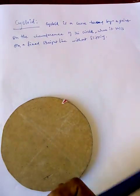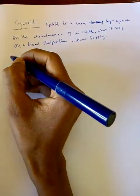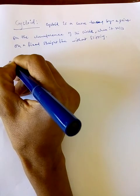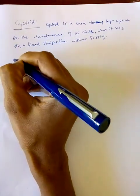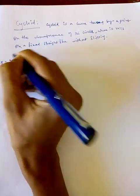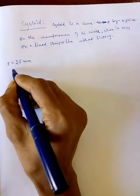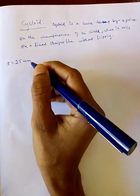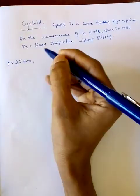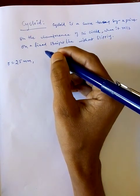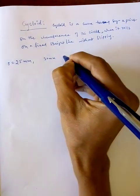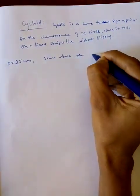From an exam point of view, you will be given only the radius or diameter of the circle — for example, 25 mm radius. That radius is enough to construct the cycloid. He may also ask you to draw the tangent at a point, for example 30 mm above the directing line.